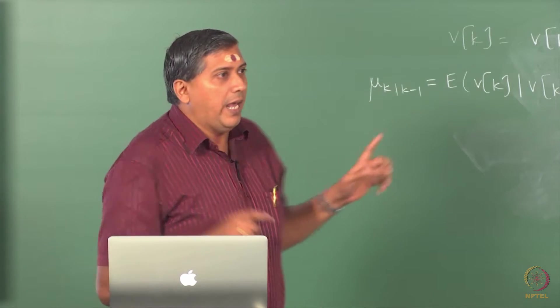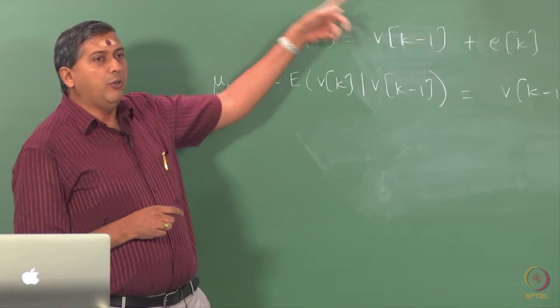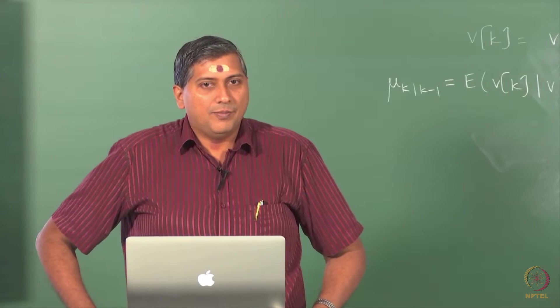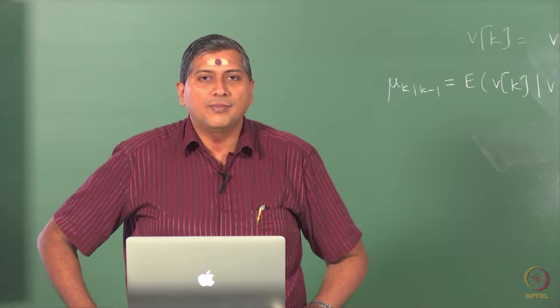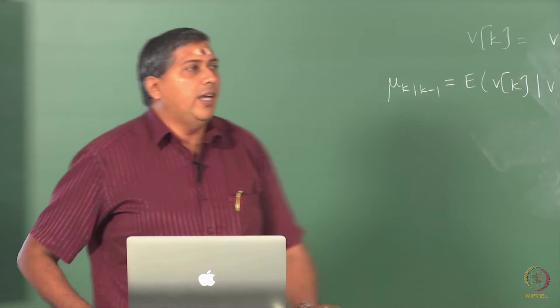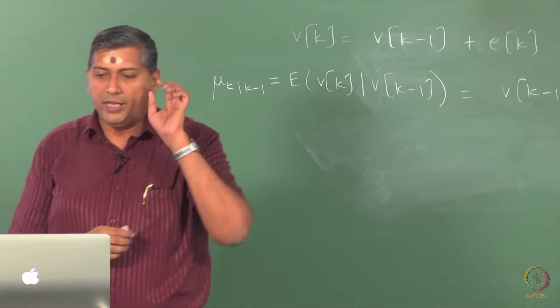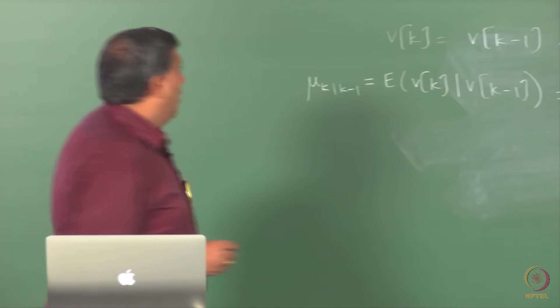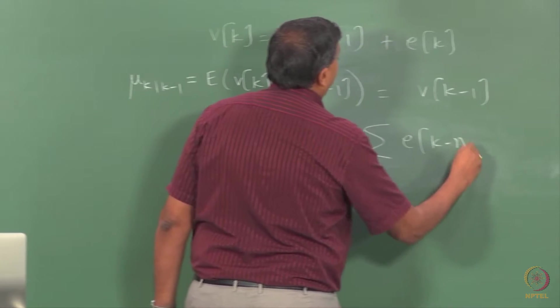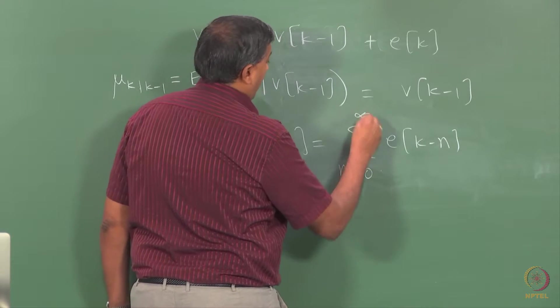We have not, this is not mu_K remember. This is not mu_K because first of all to write mu_K, we will have to write it in a different way. In fact, you can say the overall mu_K is 0. How can you show that? Is it possible to show that the overall mean is 0? What is an alternative way of writing this integrating process? As a summation, assuming that it begins from 0 initial conditions, then you can write V_K as sigma E_{K-n}, K is n running from 0 to infinity, right.